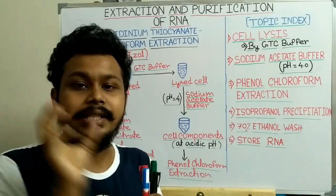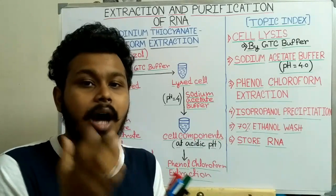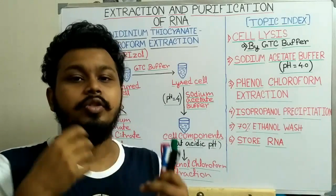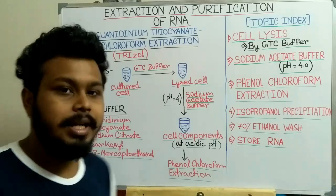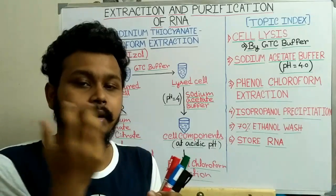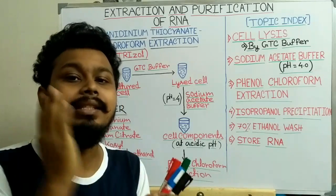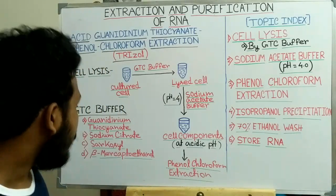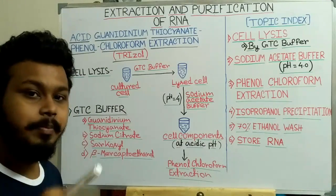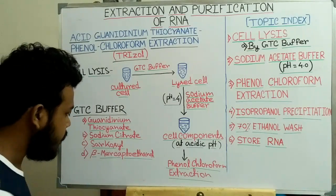Guanidinium thiocyanate can also disrupt hydrophobic interactions. Since the cell membrane — the lipid bilayer — depends on hydrophobic interactions between lipid molecules and fatty acid chains, guanidinium thiocyanate disrupts these interactions and the bilayer membrane is also disrupted, resulting in cell lysis.